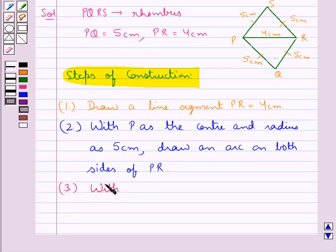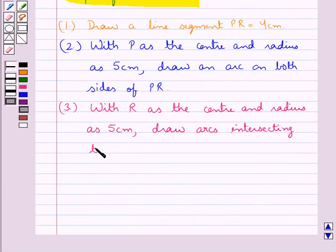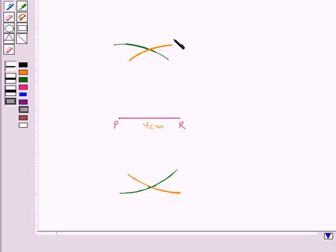Then next, in the same way, with R as the center and radius as 5 cm, we draw arcs intersecting the previous arcs at points Q and S. So, we have drawn these arcs intersecting the previous arcs. Let this point of intersection of the two arcs be Q and this point of intersection of the two arcs be S.